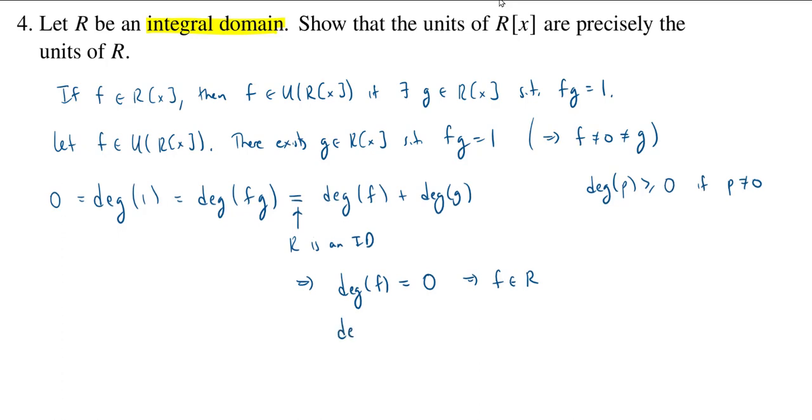So, we knew that the degree of f had to be 0, but also the degree of g had to be 0, which tells you that also g is in R. So, g is the inverse of f, but it's also in the ring. So, we actually know that f is a unit in R because it has an inverse in R. So, this implies that g is f inverse and g is in R.